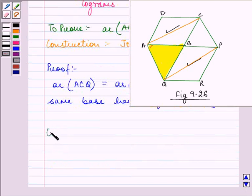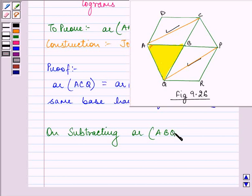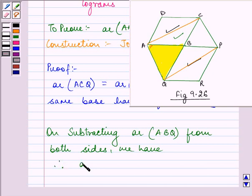So on subtracting area of triangle ABQ, that is the shaded triangle from both sides, we are left with triangle ACB will be equal to the triangle QBP.